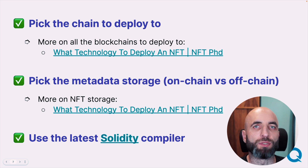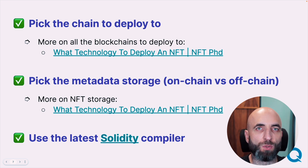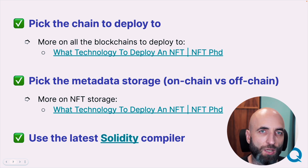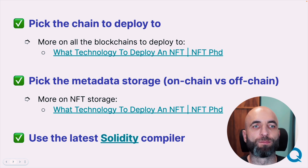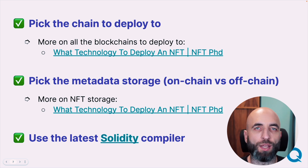Next on the list is to pick the chain to deploy to — and the whole previous episode is about choosing technologies around NFT contracts. So if you need the pros and cons of all the major blockchains, go watch the previous episode. The same goes for metadata storage — on-chain, off-chain, different options, what's best — everything is in the previous episode.